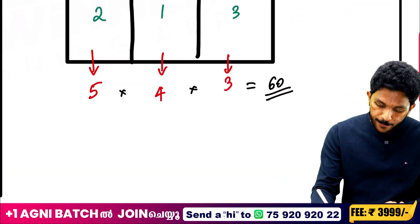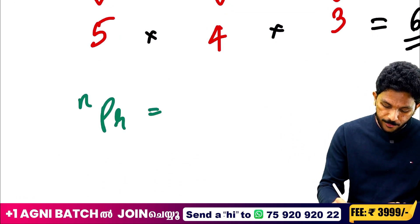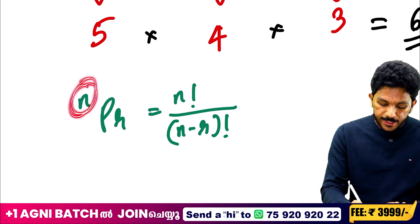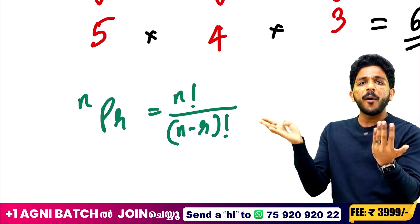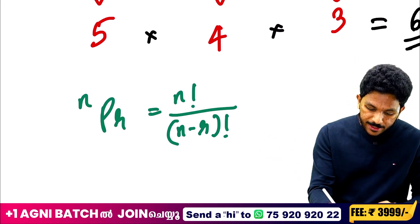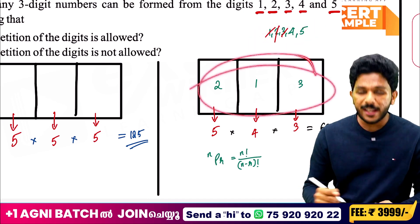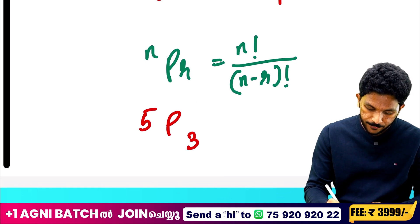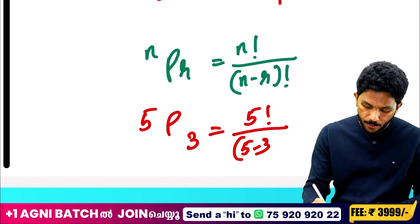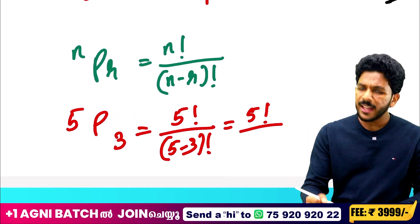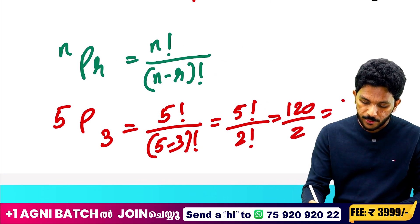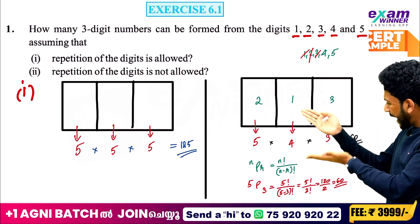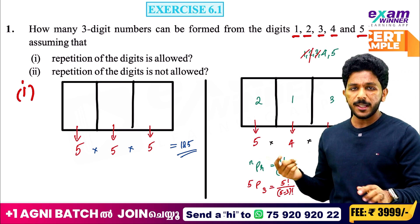This is the permutation formula. Permutation is equal to n factorial divided by (n minus r) factorial. In this case, we have 5P3 = 5! / (5−3)! = 120 divided by 2! = 60. If there is no repetition in number formation, it will be a permutation.